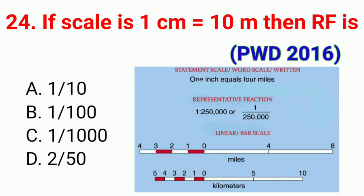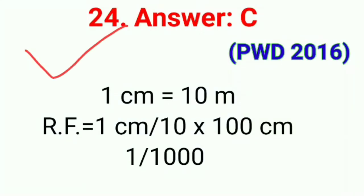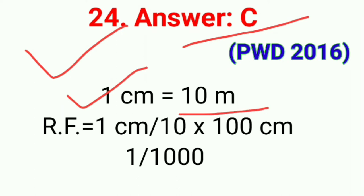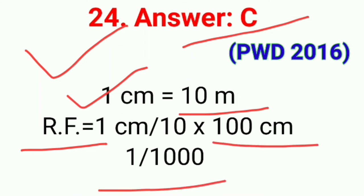Question number twenty-four: If the scale is 1 cm = 10 m, then the representative fraction (RF) is. The correct answer is option C, 1/1000. RF = 1 cm / (10 × 100 cm) = 1/1000.